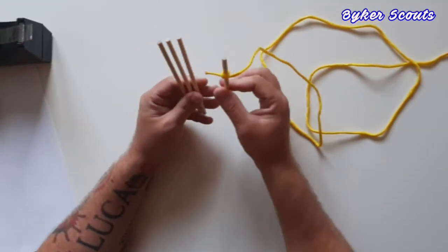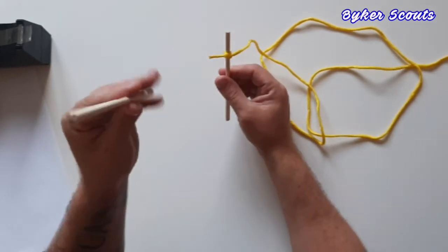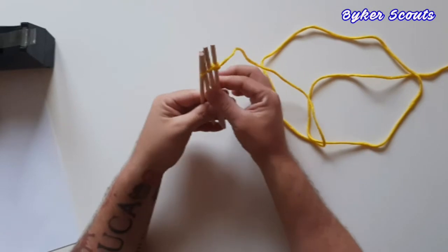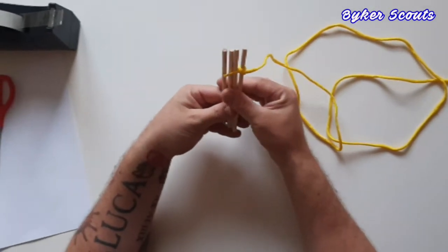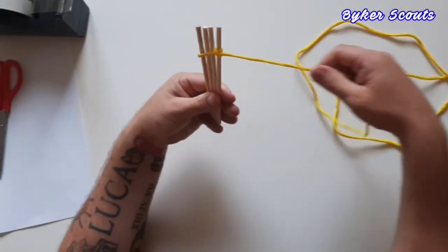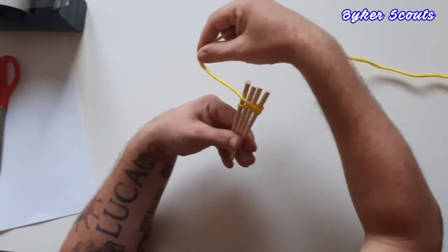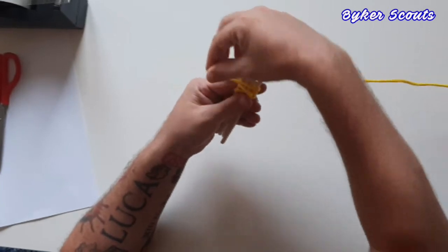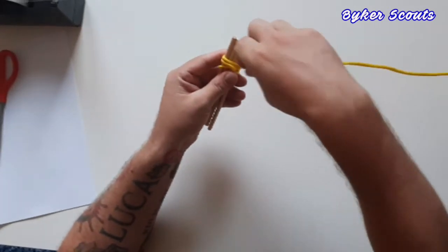With the clove hitch done, we are now going to start with the lashings. So what you need to do is grab your other three small wooden dowels, place them next to the one with the clove hitch, and then just grab your end. What you're going to do is go across them all, back around, and just wrap it around at least four or five times.